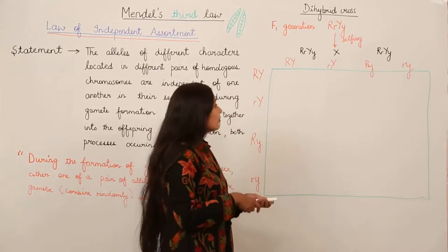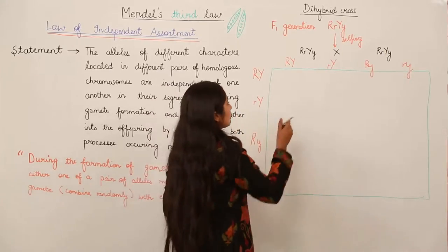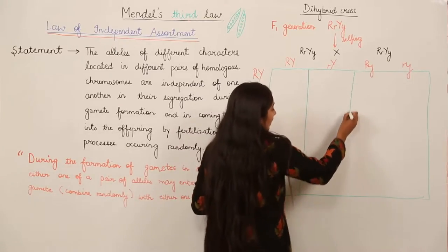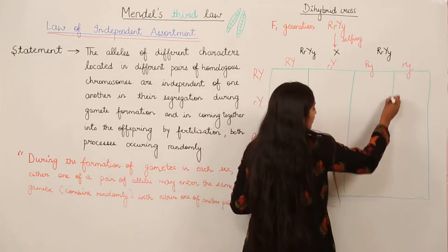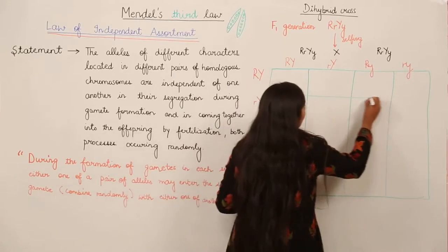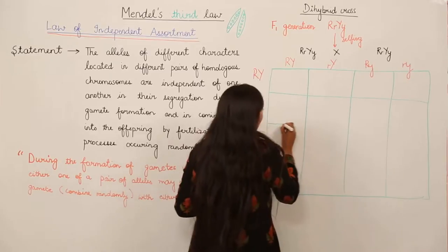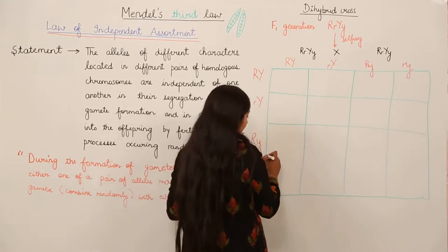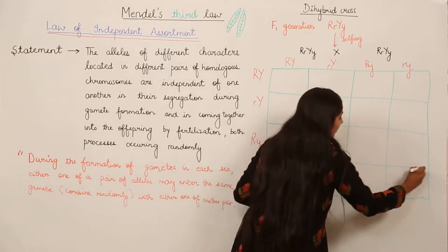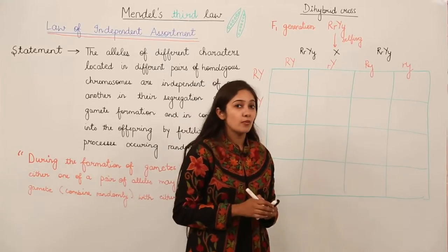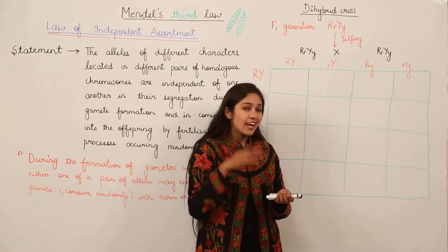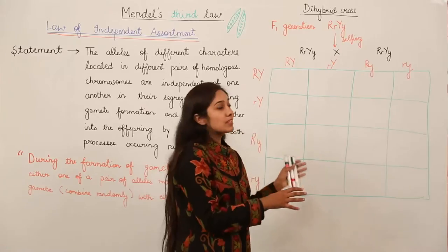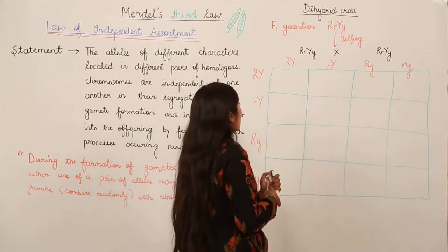Now we are going to make boxes because each box is going to encode for a separate pair. We can have 16 combinations in total — 1, 2, 3, 4, 5, 6, 7, 8, 9, 10, 11, 12, 13, 14, 15, 16. This is the Punnett square. Remember, this idea was given by a scientist named Punnett, so after his name it is called a Punnett square.